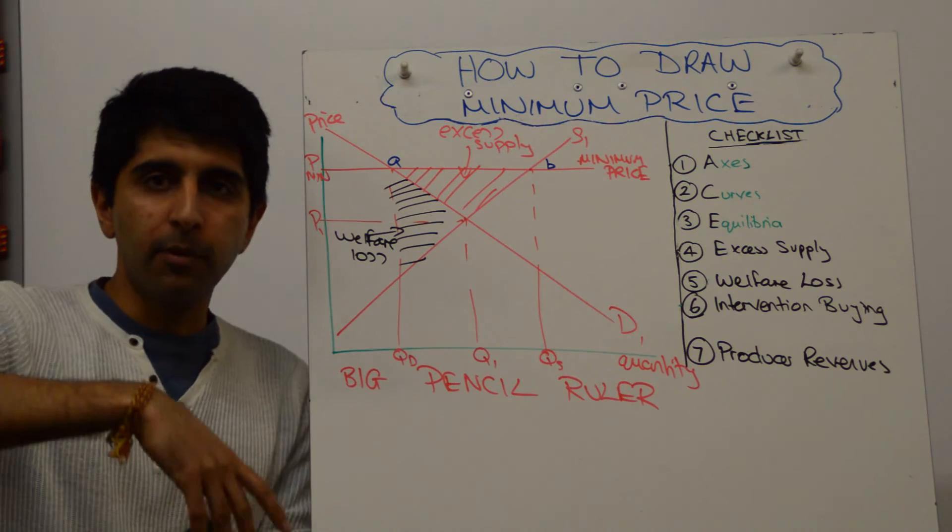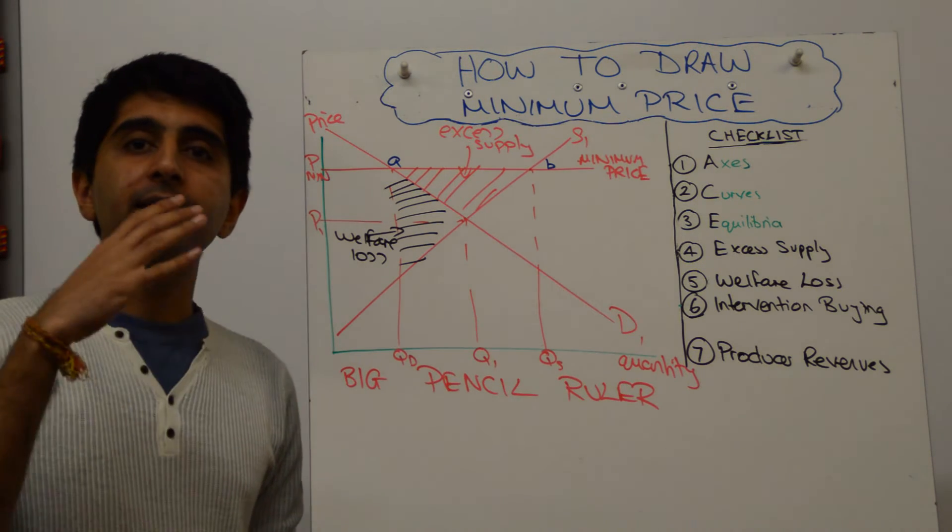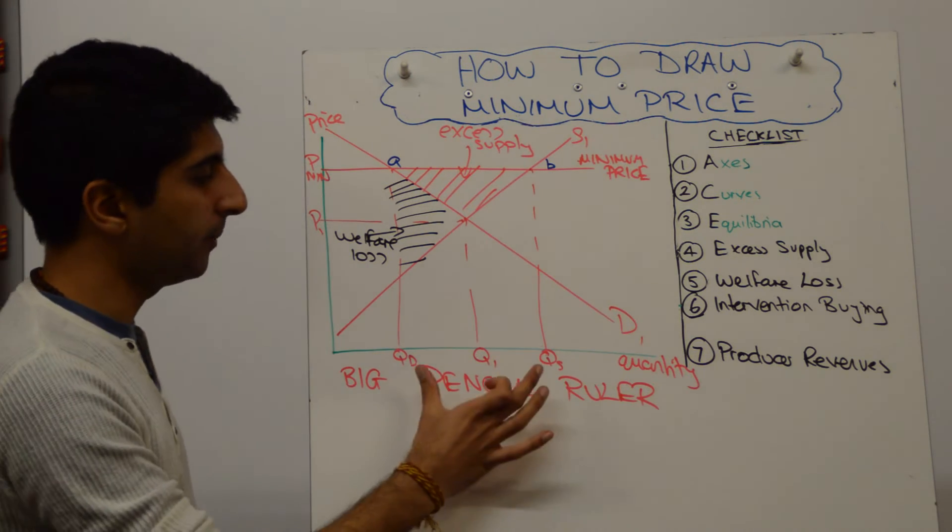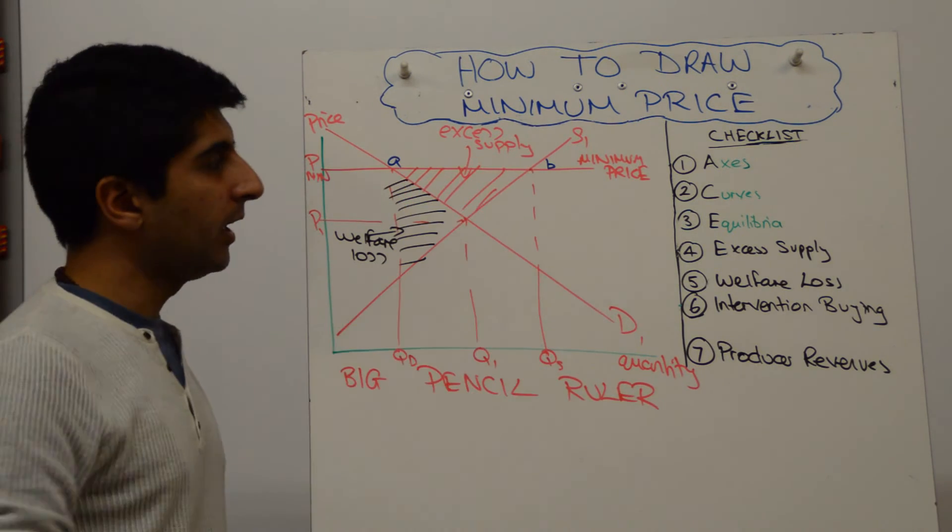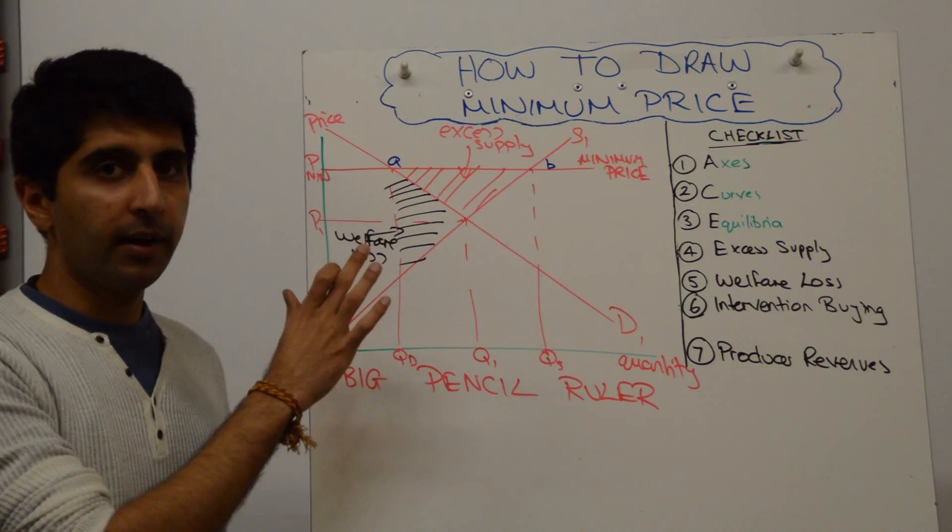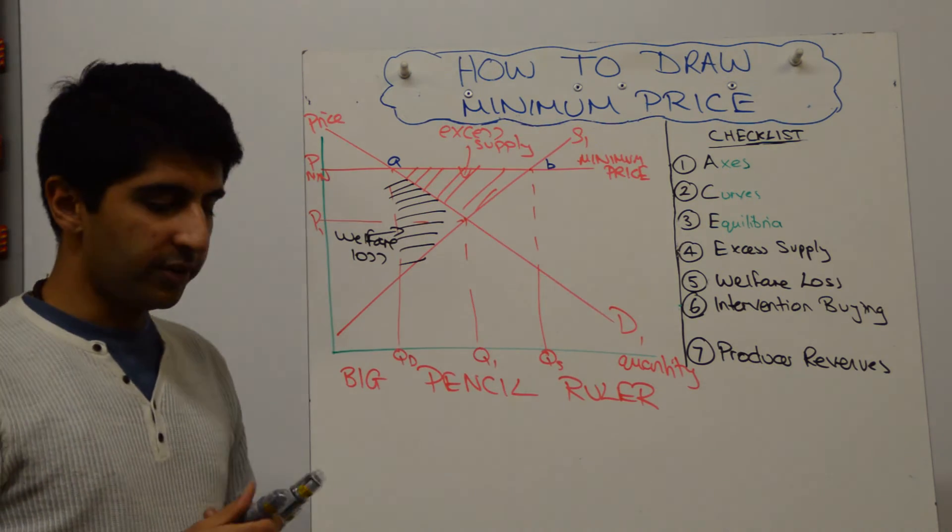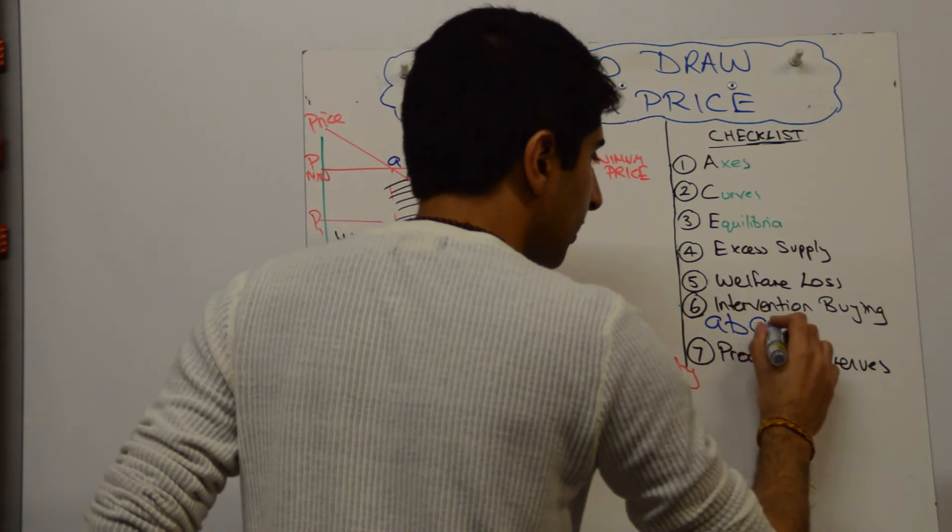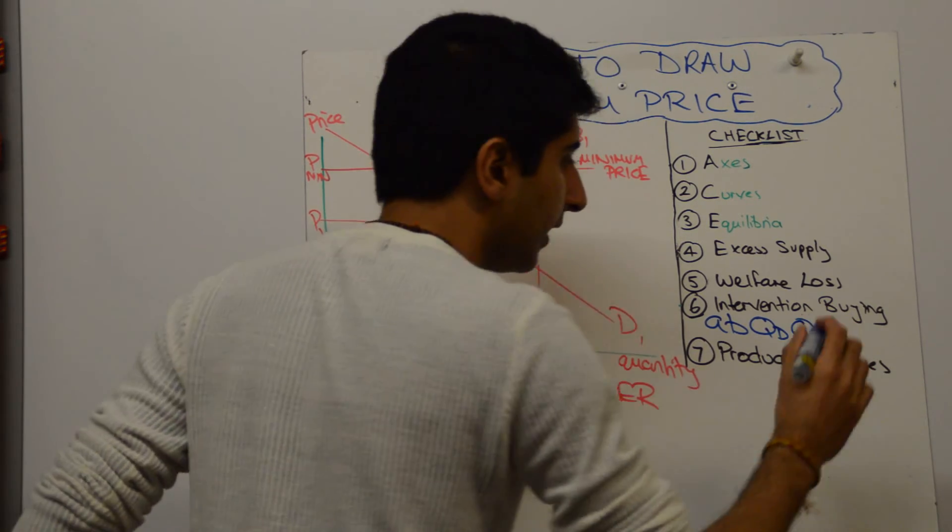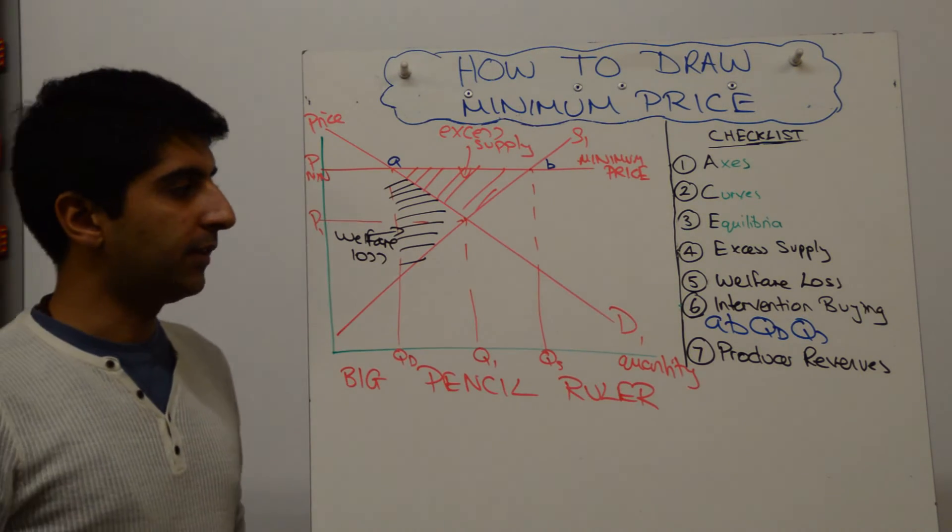Intervention buying, the government will buy up the excess supply at the minimum price of the market. So the excess supply is the distance between QD and QS, basically AB, times by the minimum price. And that gives you this rectangle, which is ABQDQS. So ABQDQS is the cost to the government of intervention buying.